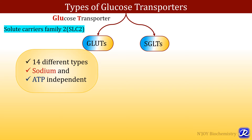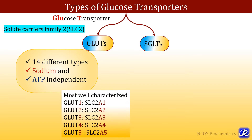There are 14 different types of GLUTs known, and these GLUTs are sodium and ATP independent — they do not require sodium and ATP for their transport. Out of 14 GLUTs, only 5 are well characterized: GLUT 1 to GLUT 5. The GLUT 1 gene is denoted SLC2A1, GLUT 2 as A2, GLUT 3 as A3, GLUT 4 as A4, and GLUT 5 as A5.